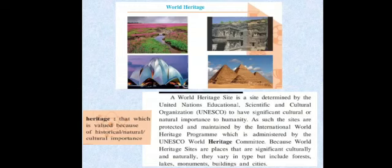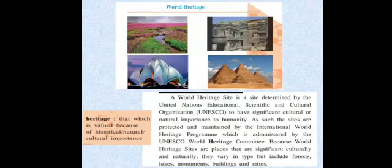Such sites are protected and maintained by the International World Heritage Program, which is administered by the UNESCO World Heritage Committee. Because World Heritage sites are significant culturally and naturally, they vary in type, but include forests, lakes, monuments, buildings and cities. These sites, which have importance for humanity, are protected and maintained by the International World Heritage Program, administered by the UNESCO World Heritage Committee. You can see the sites shown in the picture here — all those sites have some significance for human beings.